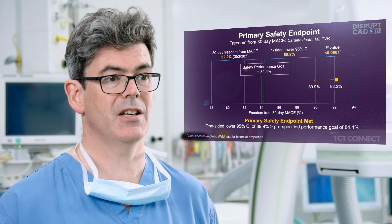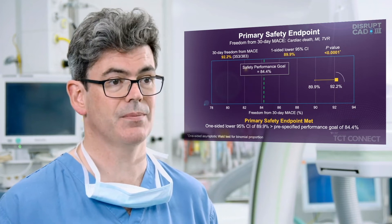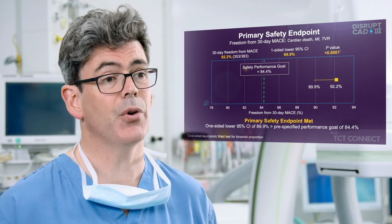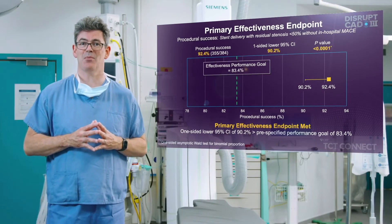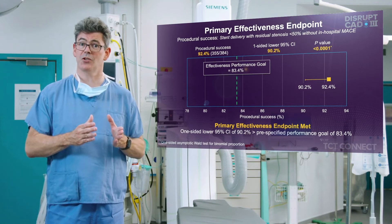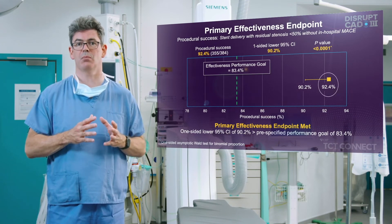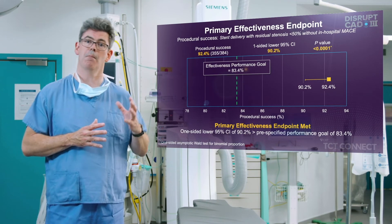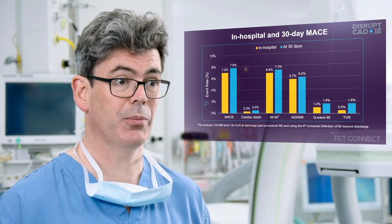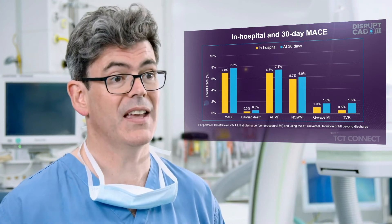The primary safety endpoint, freedom from 30-day MACE, was observed in 92.2%, with the lower confidence boundary of 89.9% meeting the safety performance goal. The primary effectiveness endpoint — stent delivery with residual stenosis less than 50% and no in-hospital MACE — was observed in 92.4%, with the lower confidence boundary of 90.2% meeting the effectiveness performance goal. In-hospital and 30-day MACE were 7% and 7.8% respectively.